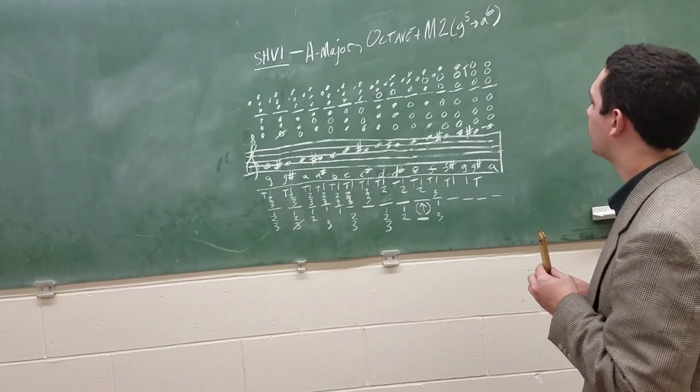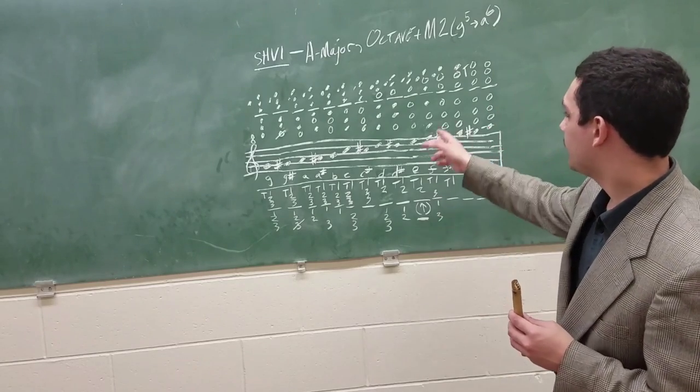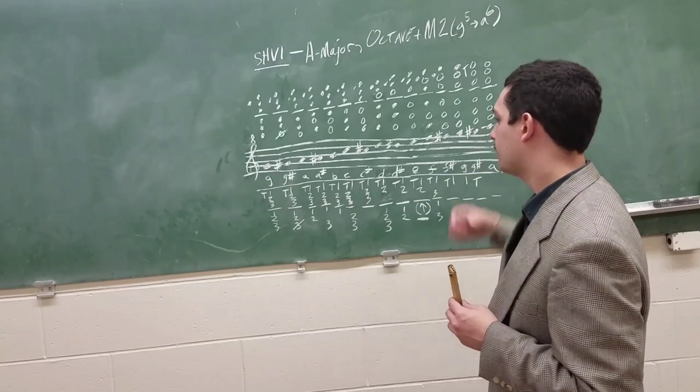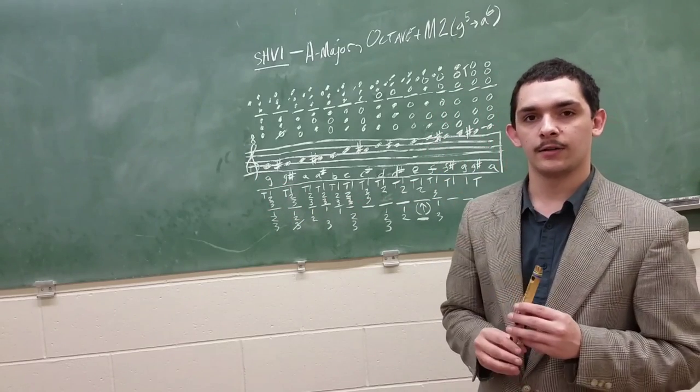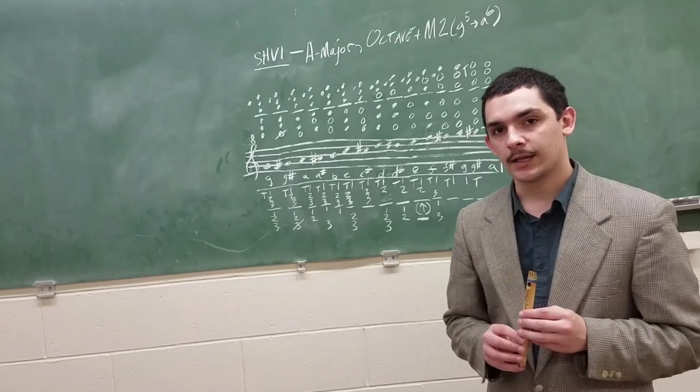I'll demonstrate an A major scale. Actually, I'll just do a chromatic scale. As you can see, it goes from G to A written. Although it's an octave higher than it's written, so it's lowest note is actually a G5.